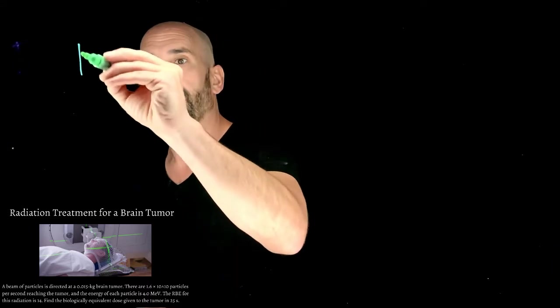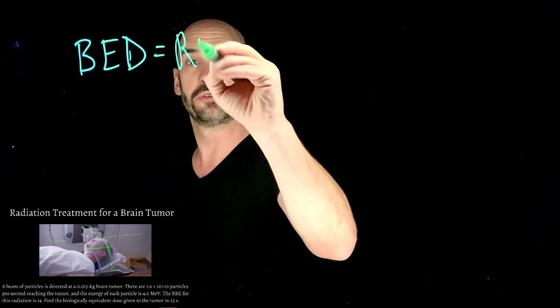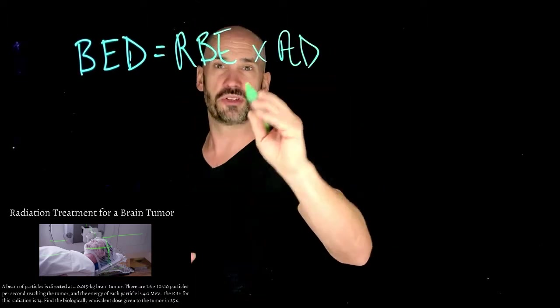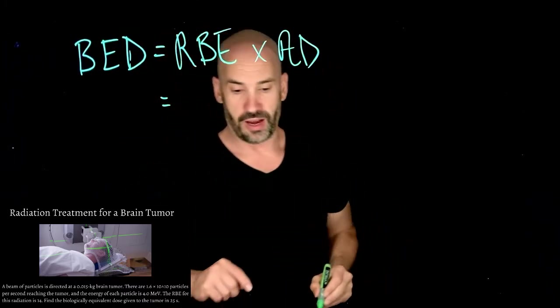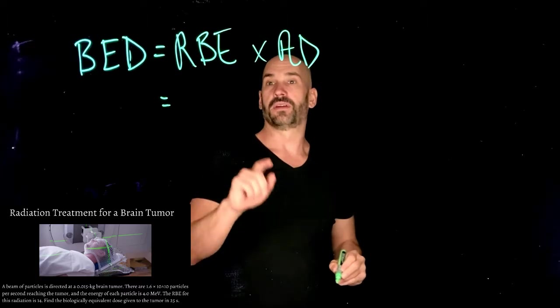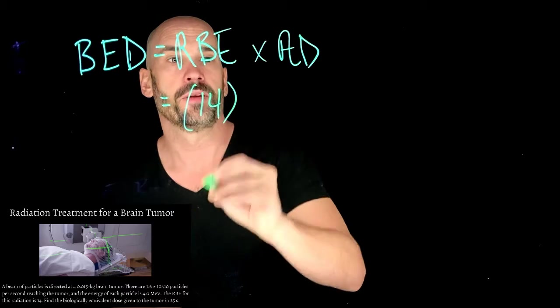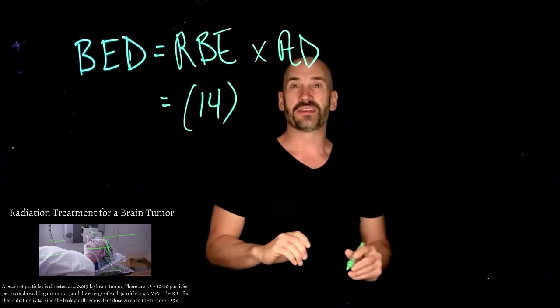Remember, simple as this, we know that the biologically equivalent dose, which I'm just going to call BED, is simply equal to the RBE, the relative biological effectiveness, times the absorbed dose. Luckily, they've already told us what the RBE is, so that's going to be 14. That leaves us to this question of what is the absorbed dose in this case?